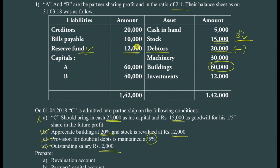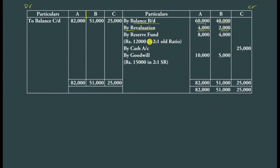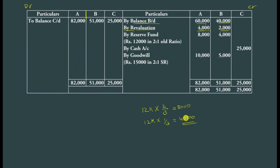Next, the reserve fund of 12,000 must also be transferred to the partners' capital accounts in the ratio of 2:1. Calculate: 12,000 × 2/3 = 8,000 for A, and 12,000 × 1/3 = 4,000 for B. These amounts are written on the credit side of each partner's capital account as 'By Reserve Fund.'